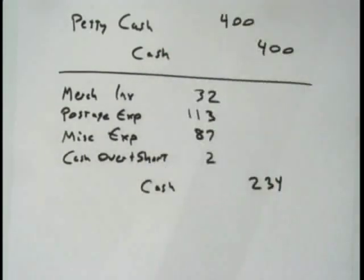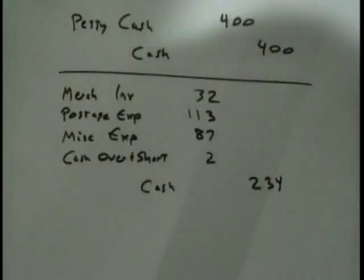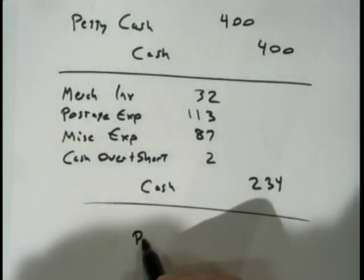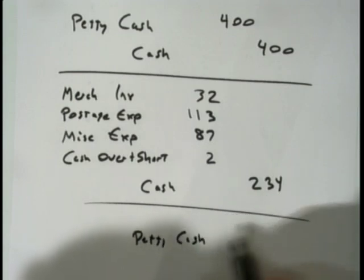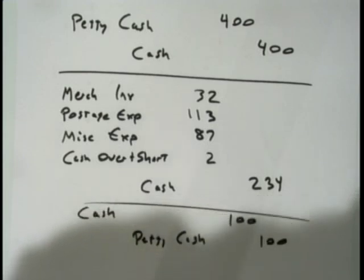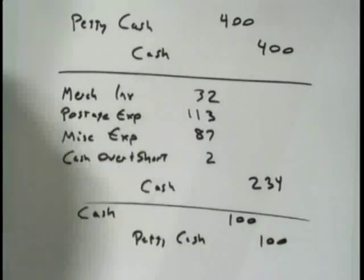They also ask: what if we decrease the fund to $300? It was at $400, so for that third entry we would debit petty cash by $100 and credit cash for $100, putting that $100 back into the checking account.